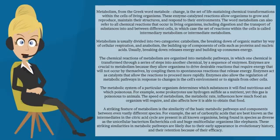A striking feature of metabolism is the similarity of the basic metabolic pathways and components between even vastly different species. For example, the set of carboxylic acids that are best known as the intermediates in the citric acid cycle are present in all known organisms, being found in species as diverse as unicellular bacteria Escherichia coli and huge multicellular organisms like elephants.